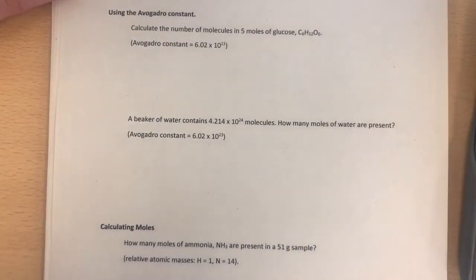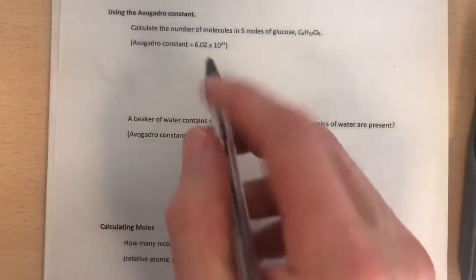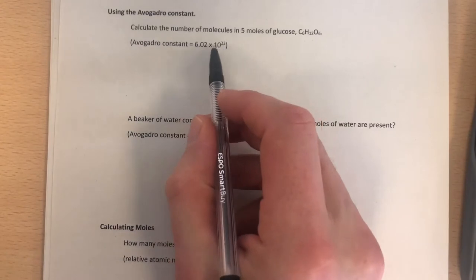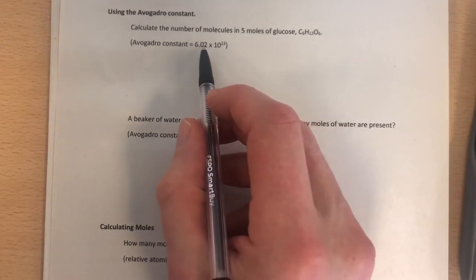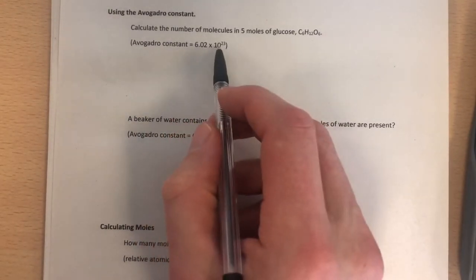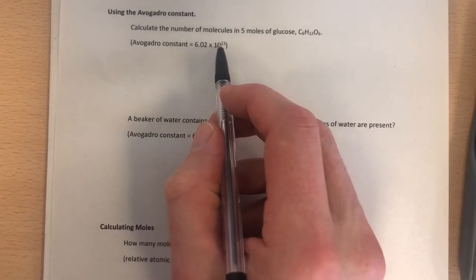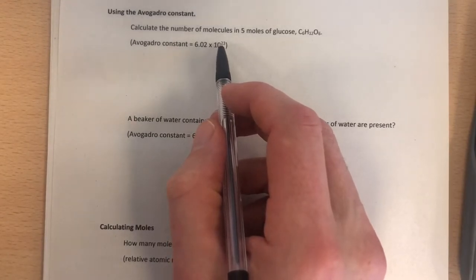So in this video we've got two calculations using the Avogadro constant. The Avogadro constant is this number here, 6.02 times 10 to the 23. Now that immediately makes it sound incredibly complicated to deal with, but the concept is really very simple.